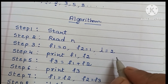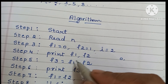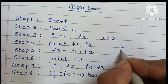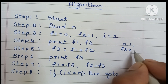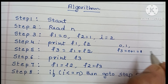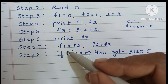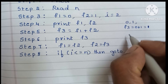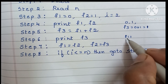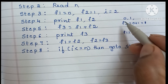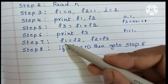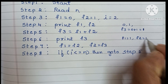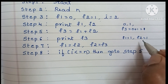Let's trace through an example. f1 is 0 and f2 is 1. We find f3: f3 equals f1 plus f2, which is 0 plus 1 equals 1. Then we interchange: f1 becomes f2, so f1 is now 1, and f2 becomes f3, so f2 is now 1.